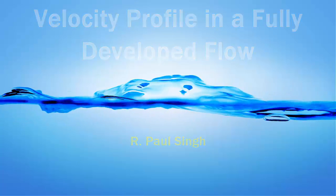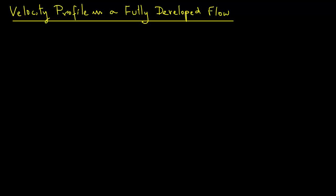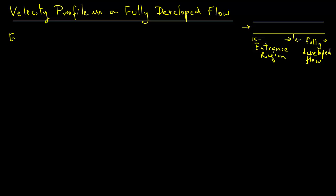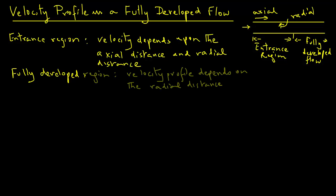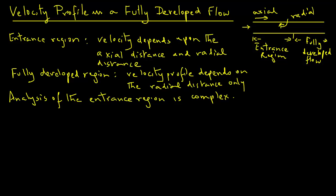Let's consider the mathematical development of a velocity profile in a fully developed flow. Recall from the previous module that as fluid enters a pipe, there is a certain distance called the entrance region, and after that it is fully developed. In the entrance region, the velocity of the fluid inside the pipe depends both on the axial distance — that is, the distance from the left-hand side — as well as the radial distance, meaning from the center of the pipe towards the inside surface. Whereas in a fully developed flow, the velocity profile depends only on the radial distance. The entrance region is quite complex to analyze, but we are going to look at what happens to the velocity profile in this fully developed flow.